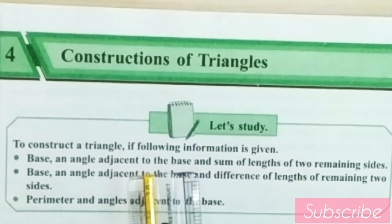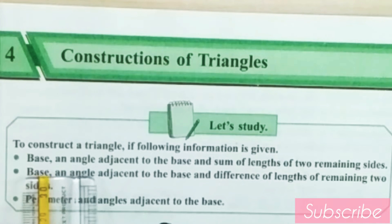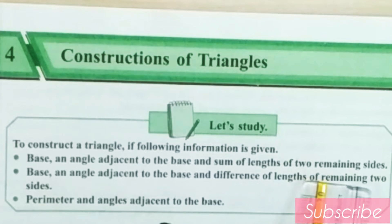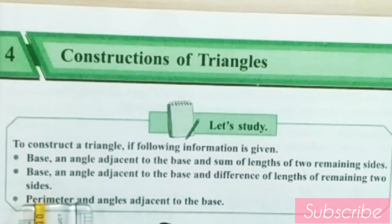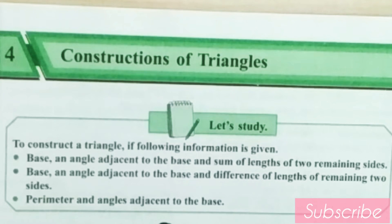In this chapter, we will learn how to construct a triangle if certain information is given. The first type is when the base, an angle adjacent to the base, and the sum of the lengths of the two remaining sides are given. The second type is when the base, an angle adjacent to the base, and the difference of the remaining two sides are given. The third type is when the perimeter and the angles adjacent to the base are given.